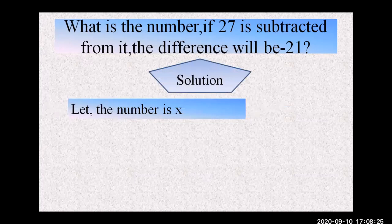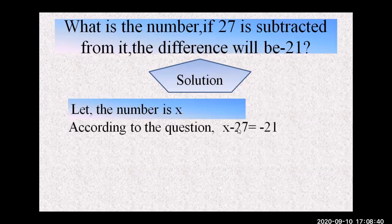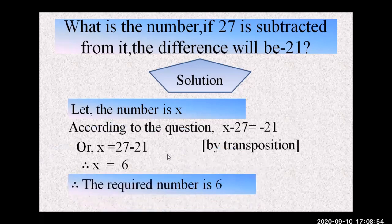Let the number be x. Given: 27 is subtracted from x, so we write x minus 27 equals minus 21. By transposition, bring 27 to the right side: x equals minus 21 plus 27, which gives x equals 6. So the required solution is 6.